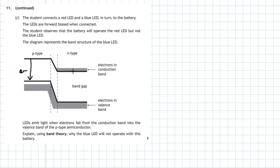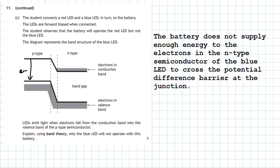Now in the case of the blue LED, the electrons are in the conduction band here. But the battery does not provide enough energy for them to surmount this little potential barrier to get over to the p-type material. It's as simple as that. So from band theory, the electrons are in the conduction band here. In order to move over to the p-type material, they must surmount this potential difference barrier, which is a small difference in energy level. In the case of the blue LED, the battery does not supply enough energy for that to happen. So there's the answer: the battery does not supply enough energy to the electrons in the n-type semiconductor of the blue LED to cross the potential difference barrier at the junction.